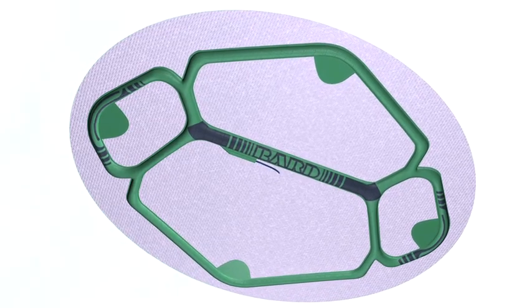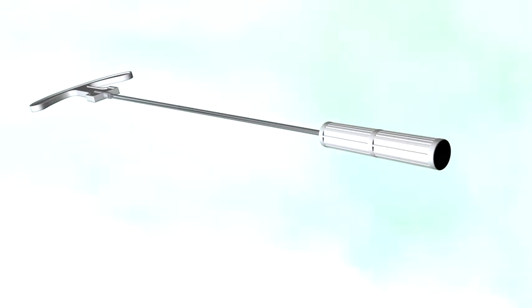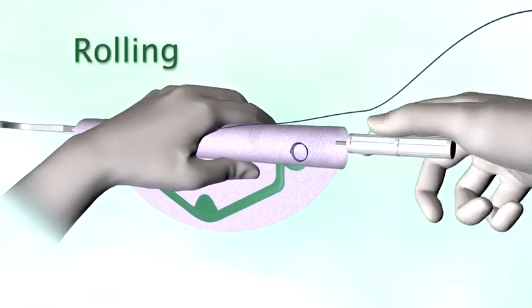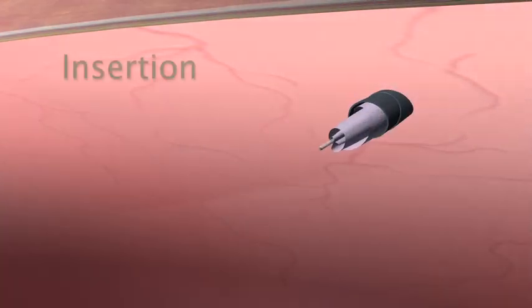Ventralite ST Mesh with the ECHO-PS Positioning System comes pre-packaged with an introducer tool. The introducer tool holds the mesh in place, ensuring a tight, uniform roll for ease of insertion through the trocar.